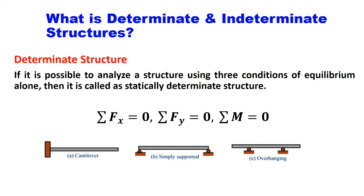So what is determinate and indeterminate structures? You already learned this in second year of your engineering, B.Tech or B.E. Determinate structures means structures which can be analyzed or solved using three conditions of equilibrium. Those structures are called as statically determinate structures. The conditions of equilibrium are summation of Fx equal to 0, summation of Fy equal to 0, and summation of moment equal to 0. If you are able to find out the support reactions of any structure using these three equations of equilibrium, then that structure is called as statically determinate.